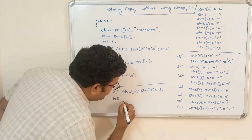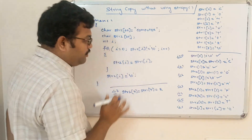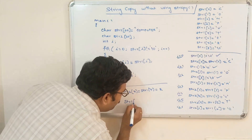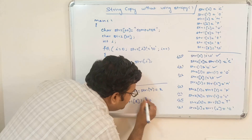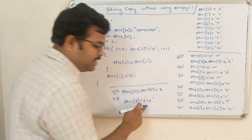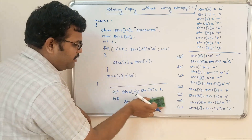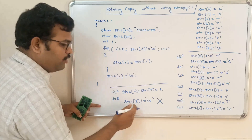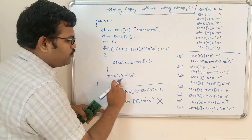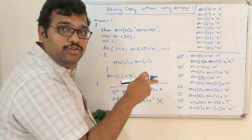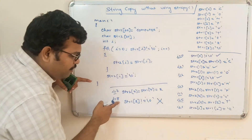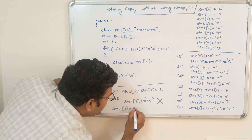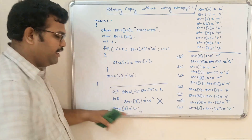When i=8, str1[8] is equal to '\0', so the condition fails and the loop terminates. After the loop, str2[8] = '\0' — the null character is added at the end of str2.